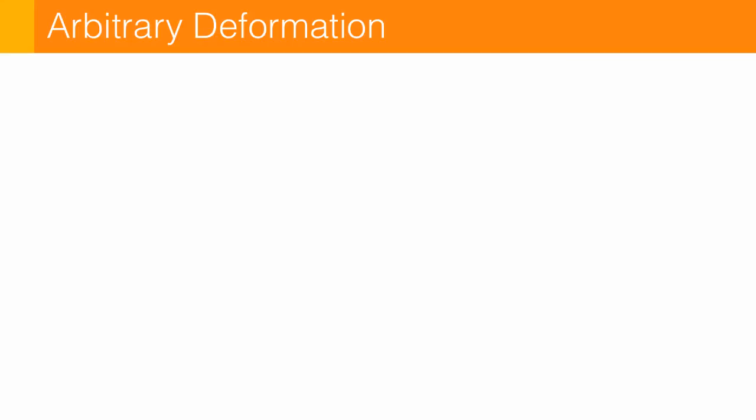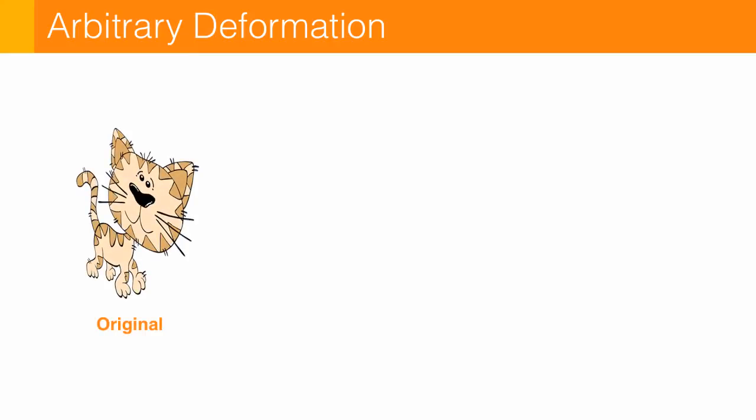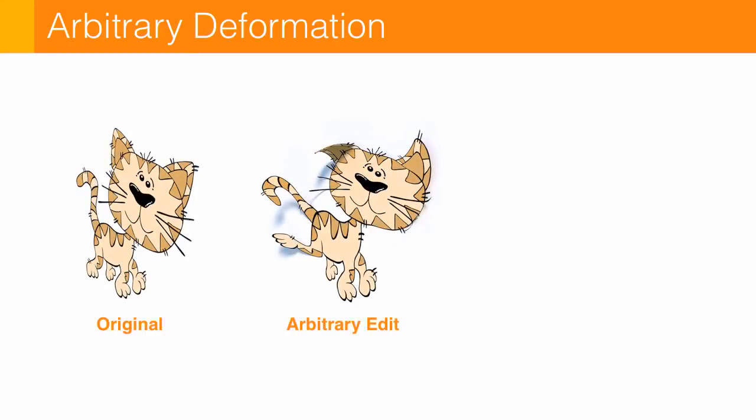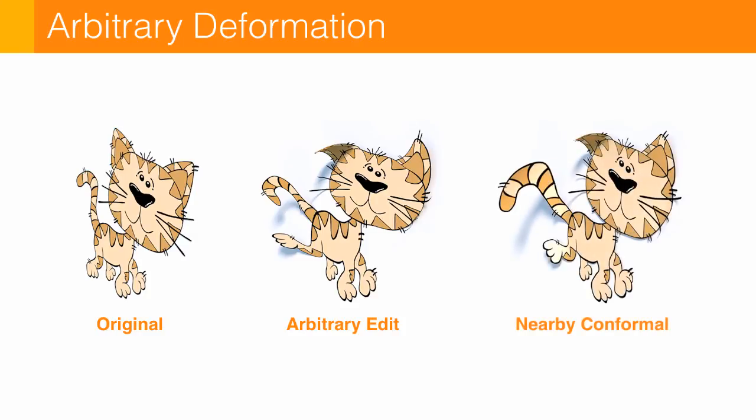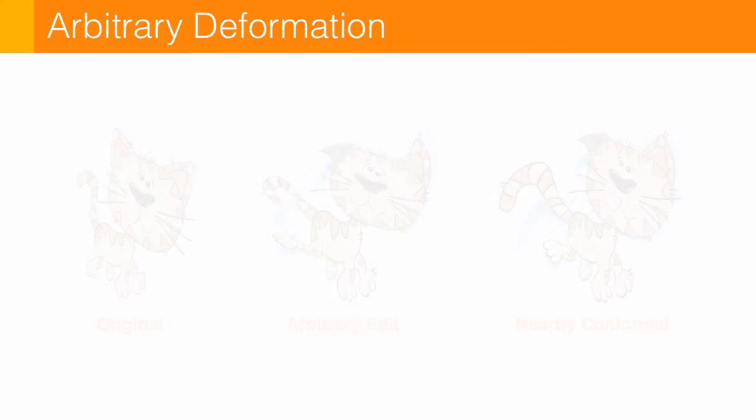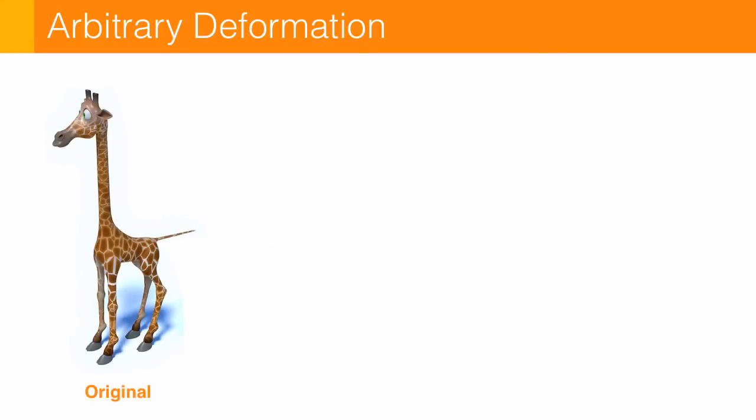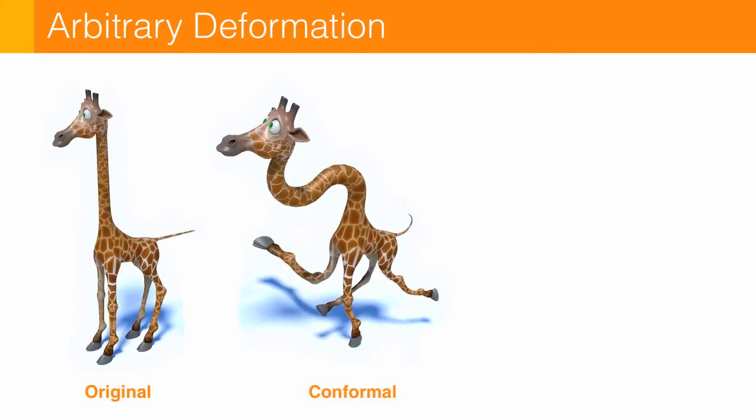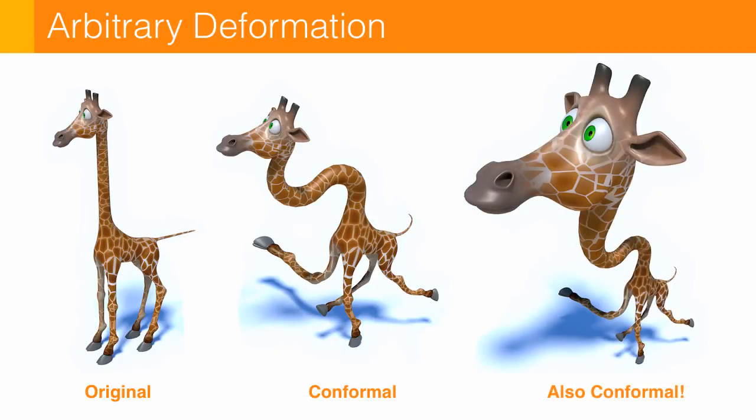Now, not everybody wants to work with surfaces by painting on them. So in our paper, we describe a way to take a mesh, edit it in a completely arbitrary way. So you might use handle based deformation. Here I've used some commercial editing tool. And then very easily, we can come up with a nearby conformal deformation. Here's just another example where we take this giraffe, and we can do some pretty crazy things to this guy. But the texture remains looking nice.